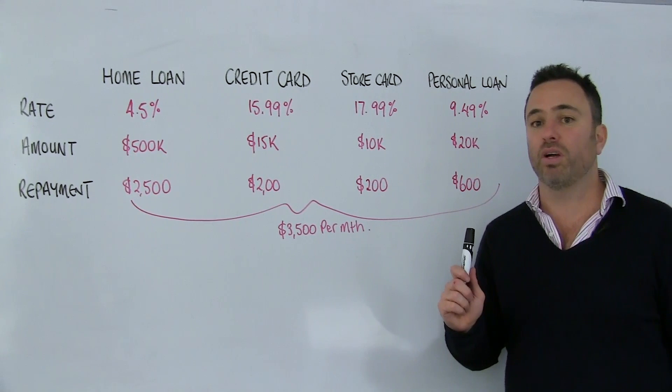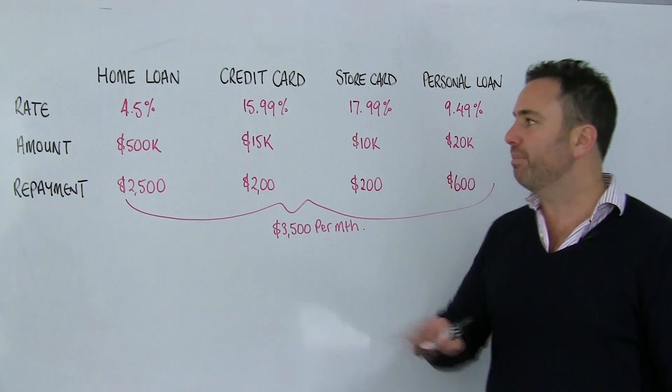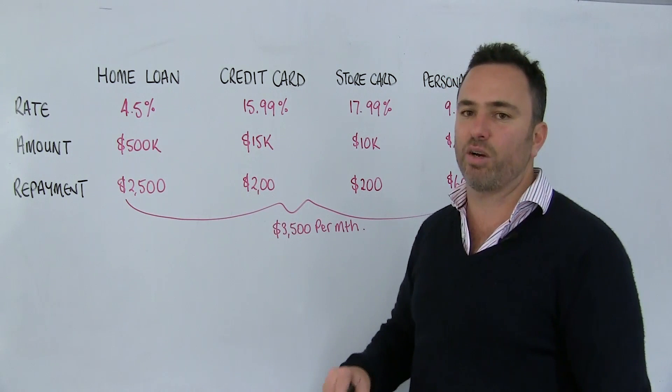As I said, this is an all too common situation that we find ourselves in. We get clients coming in to us saying, I need to consolidate some debt. We'll get to the most important question at the end. But let's just look at the scenario here. I've got the home loan at 4.5%, 500 grand outstanding. I've got to pay 2.5 grand a month.